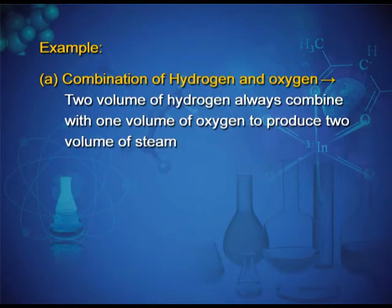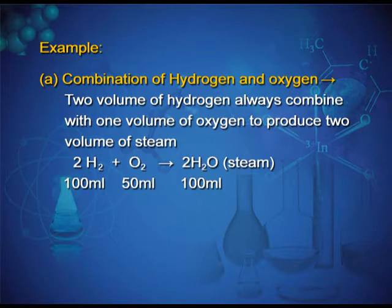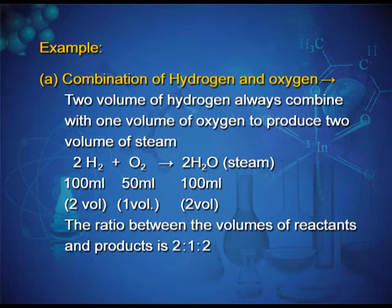For example, 2 volumes of hydrogen always combine with 1 volume of oxygen to produce 2 volumes of steam (water vapor). The reaction is 2H₂ + O₂ → 2H₂O. We can say 100 mL of hydrogen plus 50 mL of oxygen gives 100 mL of H₂O. The ratio between the volumes of reactants and products is 2:1:2.